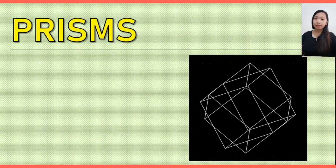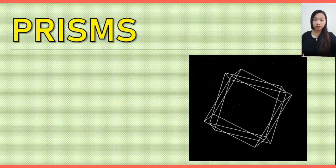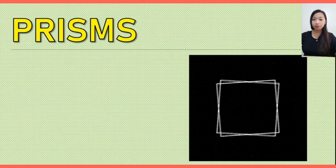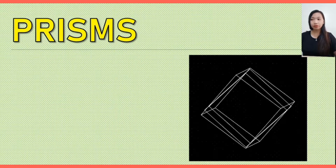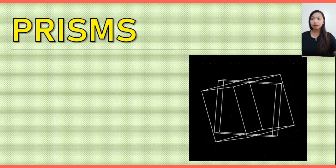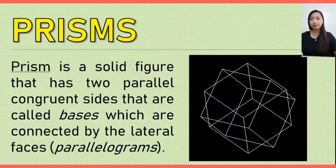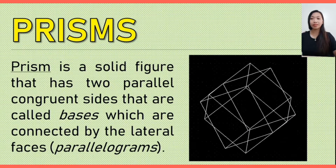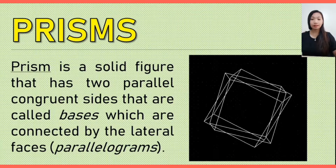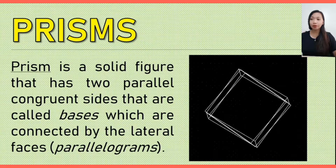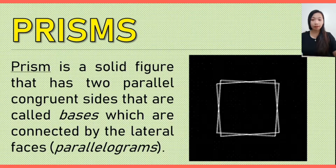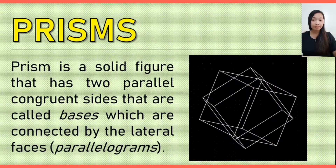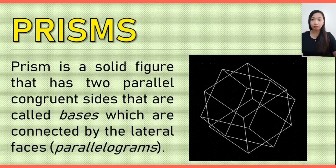Our first topic for today is about prisms. So, what are prisms? A prism is a solid figure that has two parallel congruent sides that are called bases, which are connected by the lateral faces or the parallelograms.